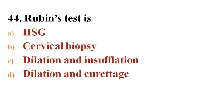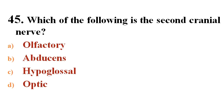Next question: Rubin's test is? Options A. HSG, B. Cervical biopsy, C. Dilation and insufflation, D. Dilation and curettage.